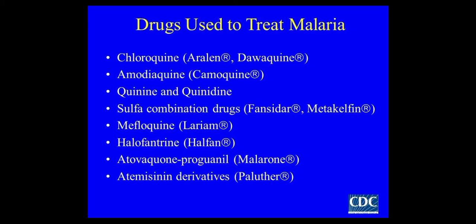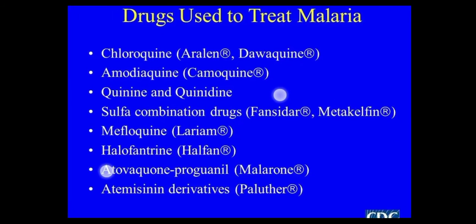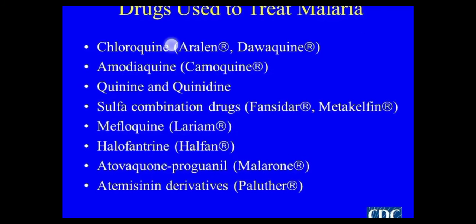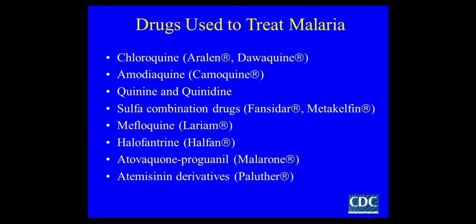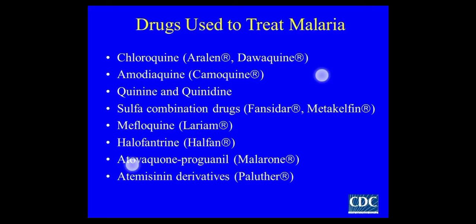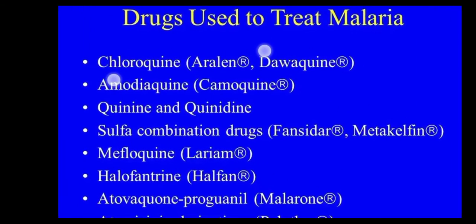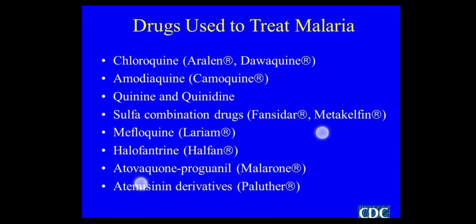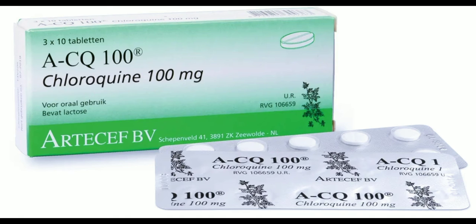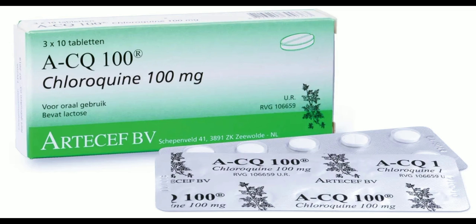Drugs used to treat malaria include chloroquine, quinine, and mefloquine — important alkaloids mainly used to treat malaria. Chloroquine is obtained from the bark of cinchona plants. Chloroquine 100mg tablets are available in the market and used as prescribed by the doctor.